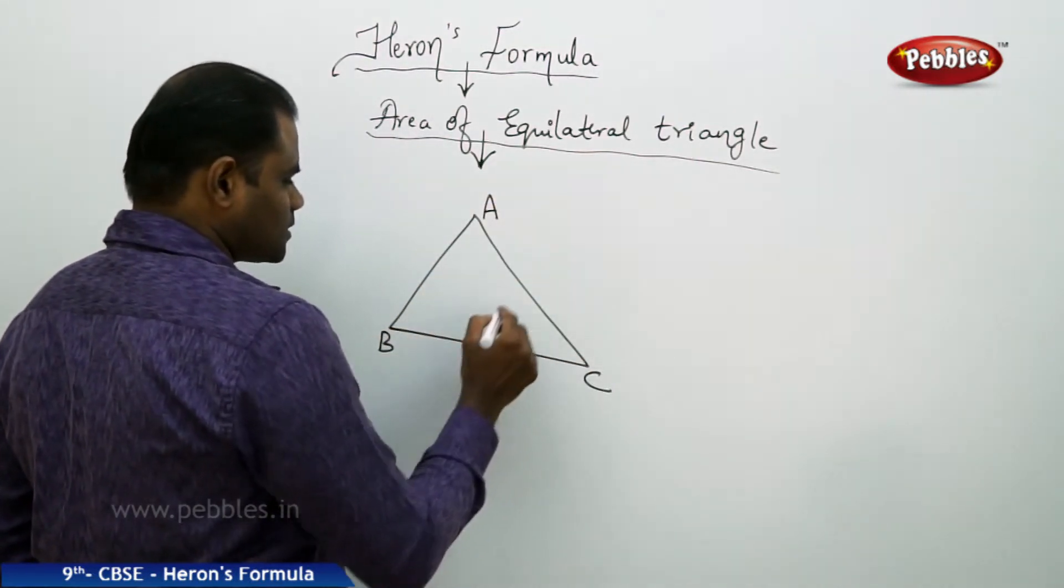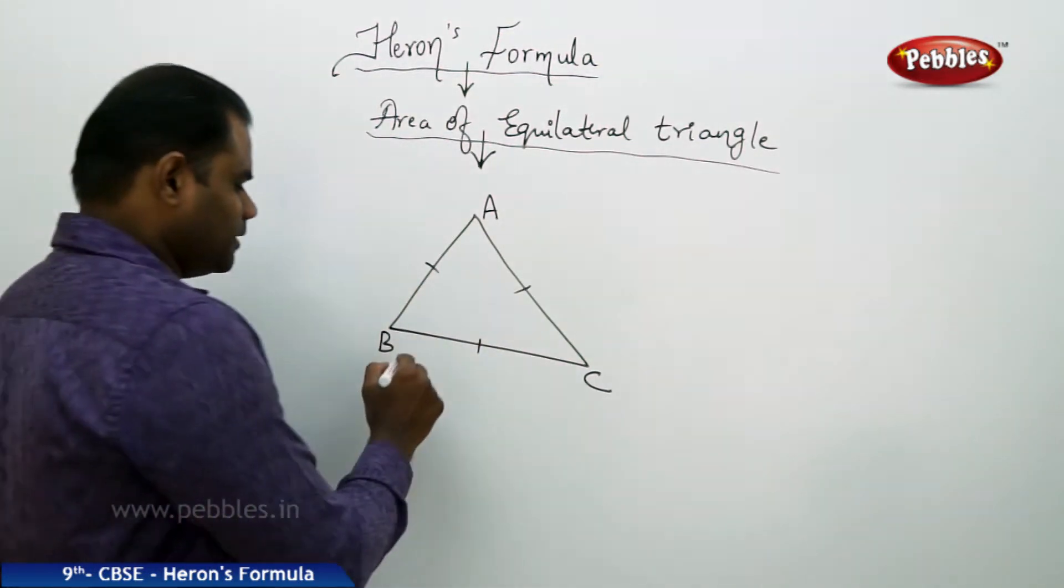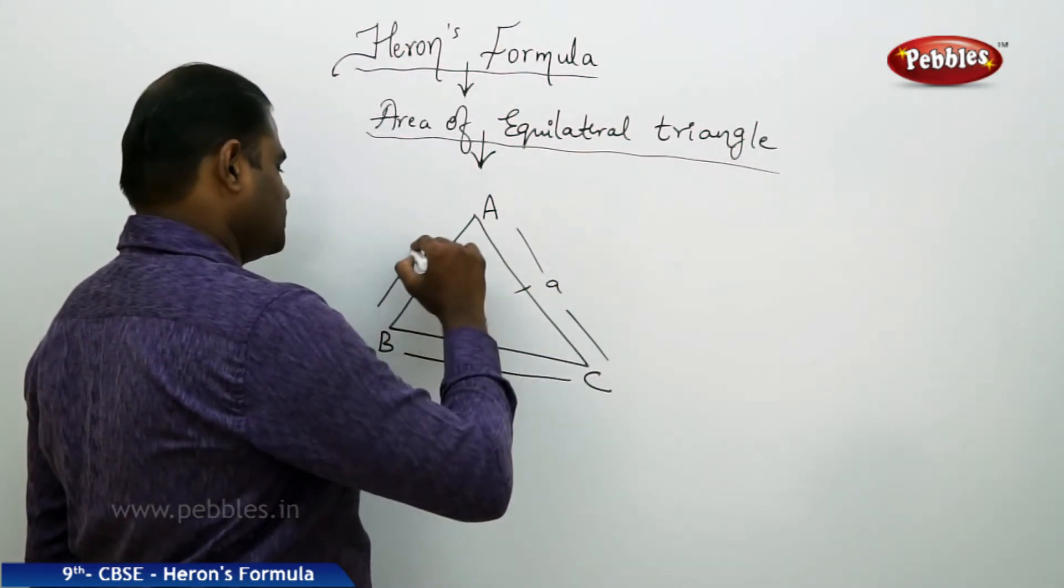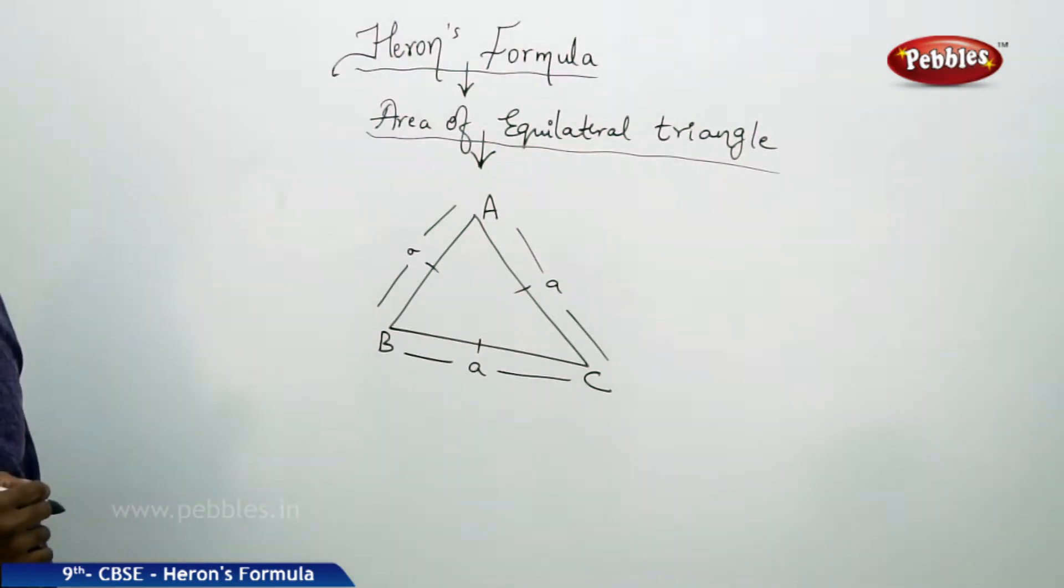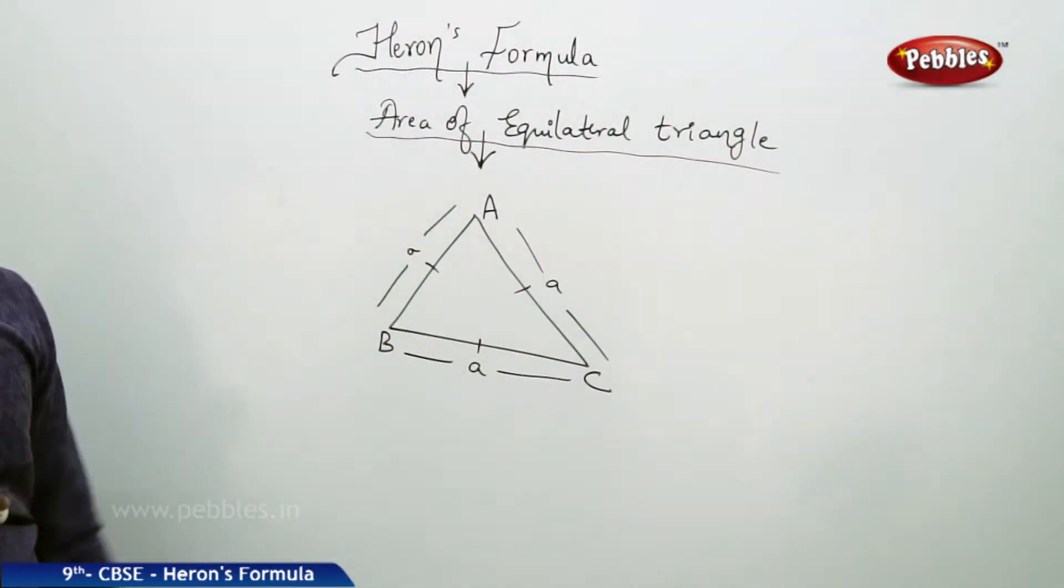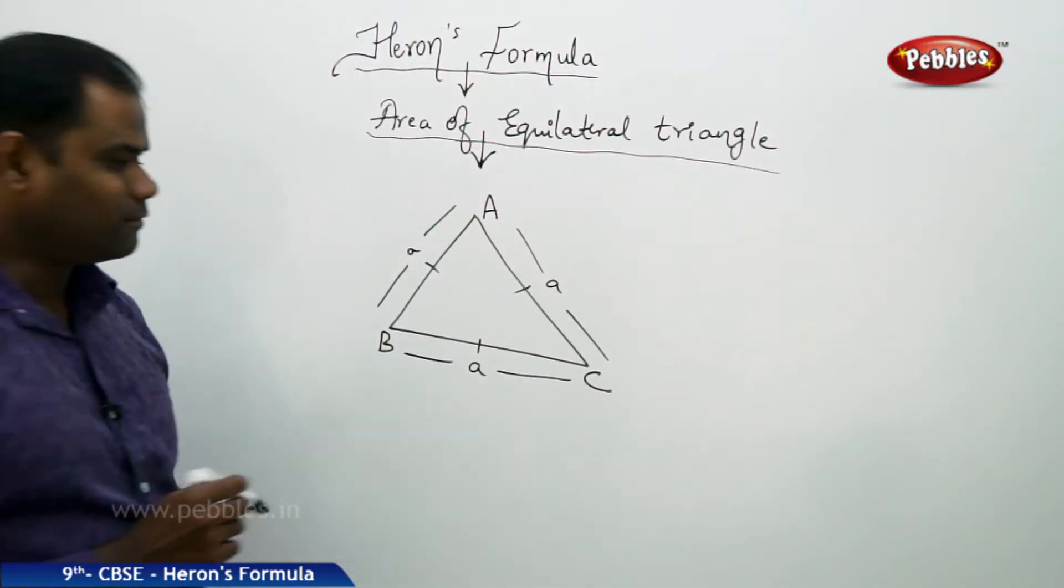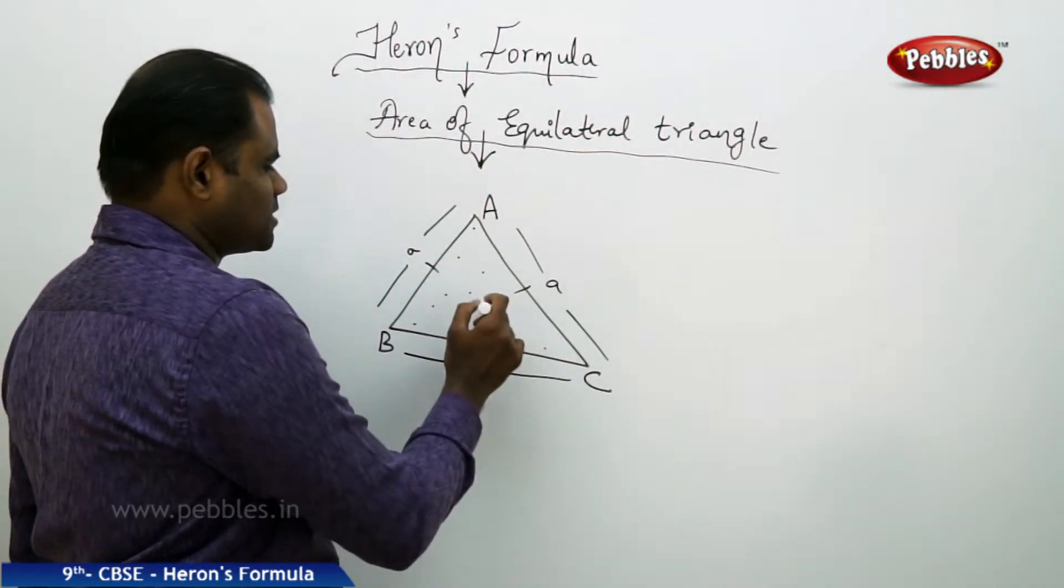So this is equilateral if all these three sides are equal. That means if I take one of the sides as A, even this would be A and this would also be A. So for a triangle which is equilateral with each sides being equal, area of this equilateral triangle is given by a specific formula.